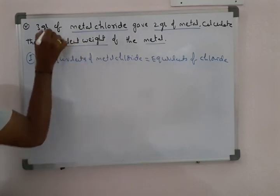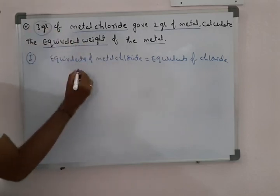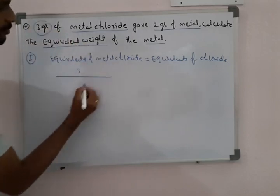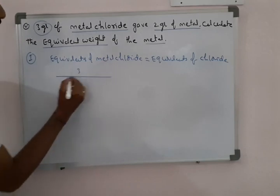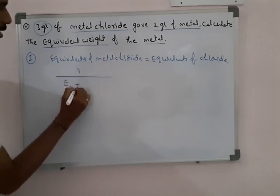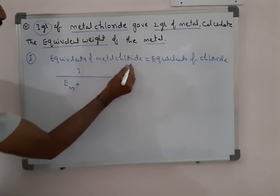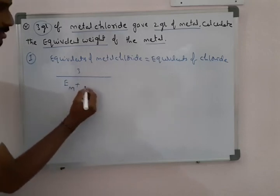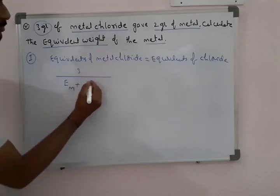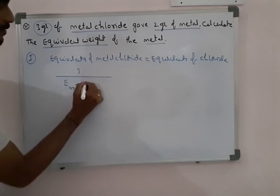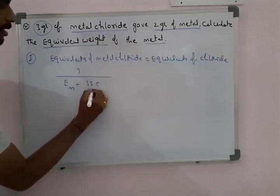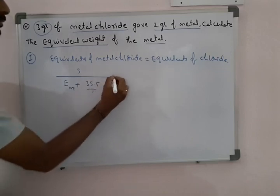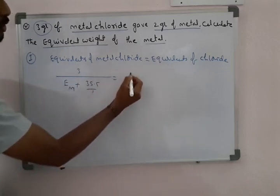The weight of metal chloride is 3 grams. The equivalent weight of metal chloride means equivalent weight of metal plus equivalent weight of chlorine. Equivalent weight of chlorine is 35.5 divided by 1. So equivalent weight of chloride is 35.5.